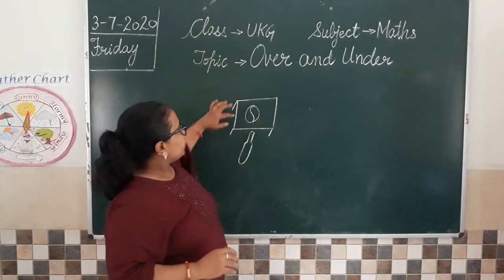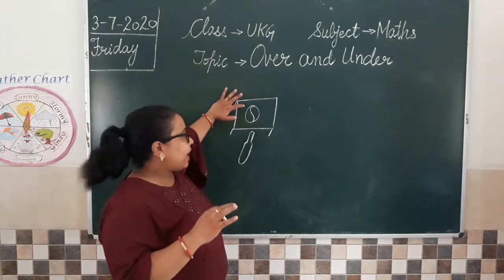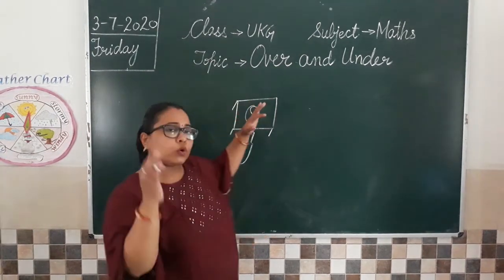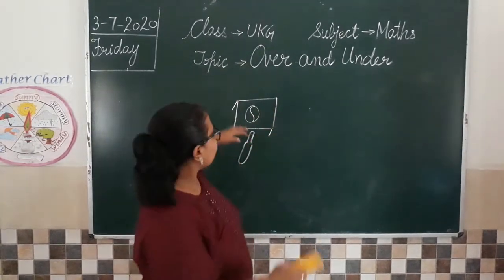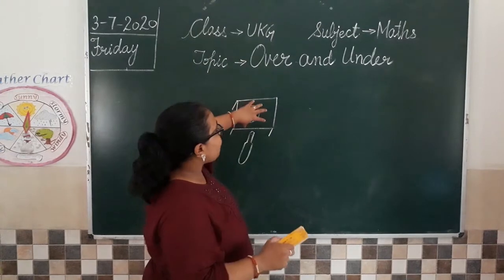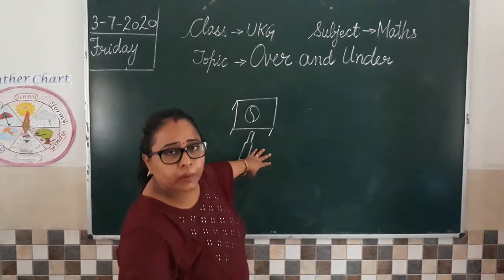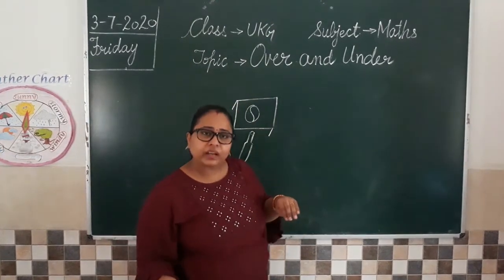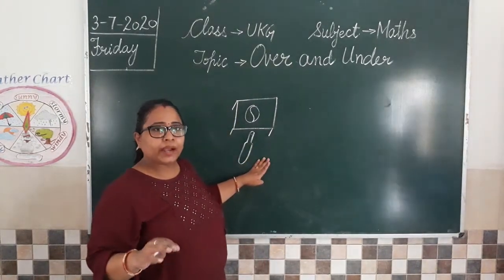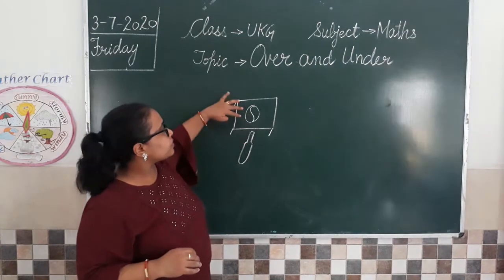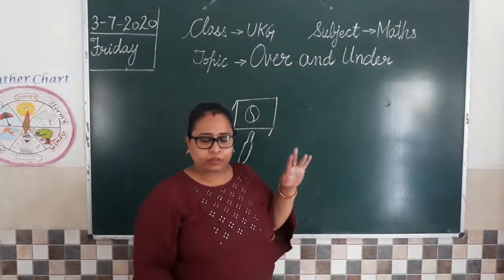Can you tell me which is over? Over means upar — above. The ball is on the table — over the table. Table ke upar hai. So the ball is over the table. And the bat is under the table — bat is placed below the table. What is the position of bat? Under. And what is the position of ball? Over. Over the table. Under the table. Understood?